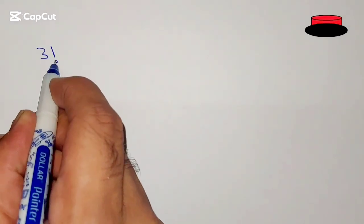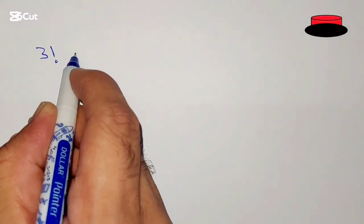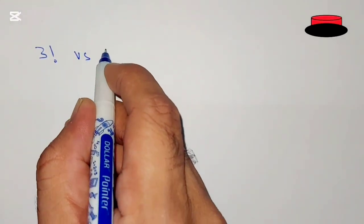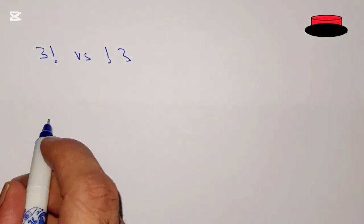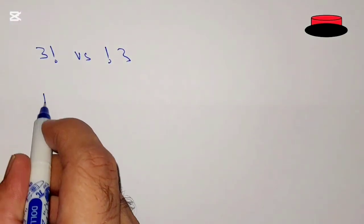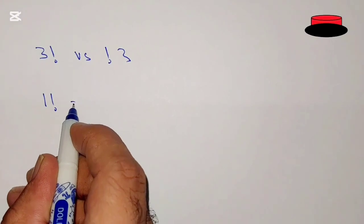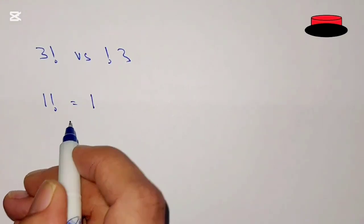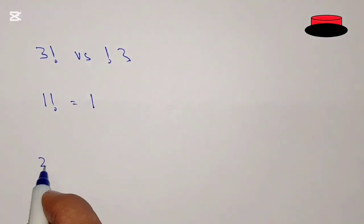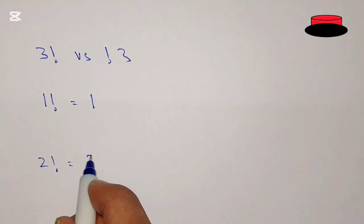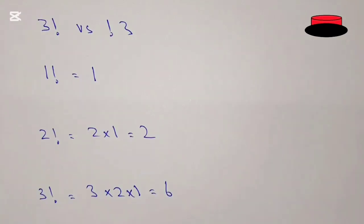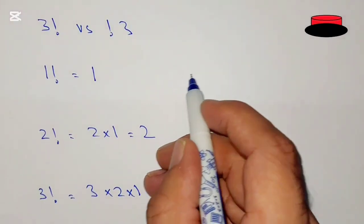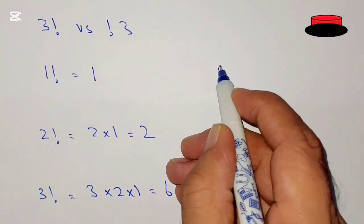Hello, what's up guys, welcome to the new video. In this video we are going to learn about 3 factorial and sub factorial 3. So what is 3 factorial? We know that 1 factorial is equal to 1, and 2 factorial is equal to 2 into 1, that is 2, and 3 factorial is 3 into 2 into 1.